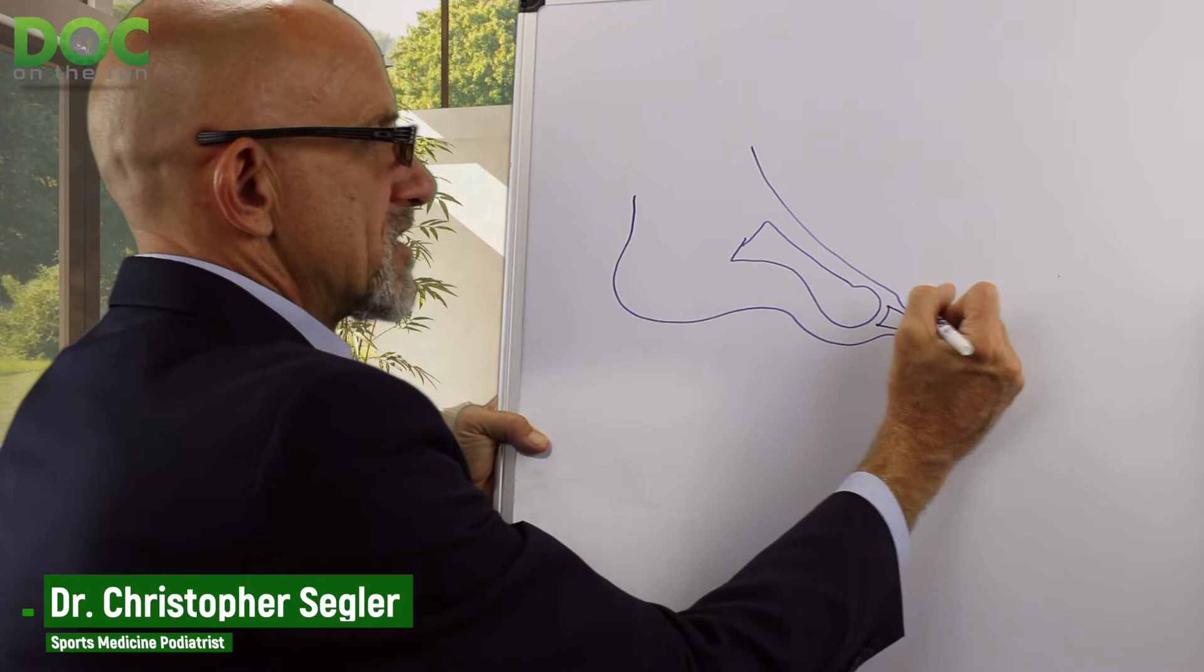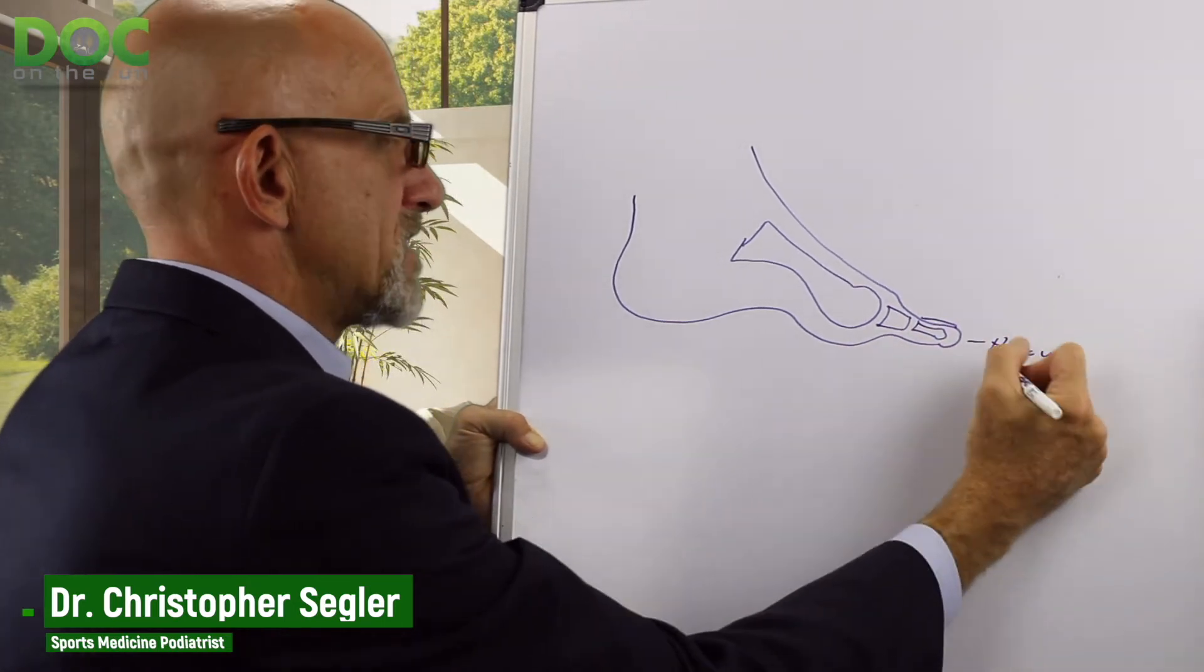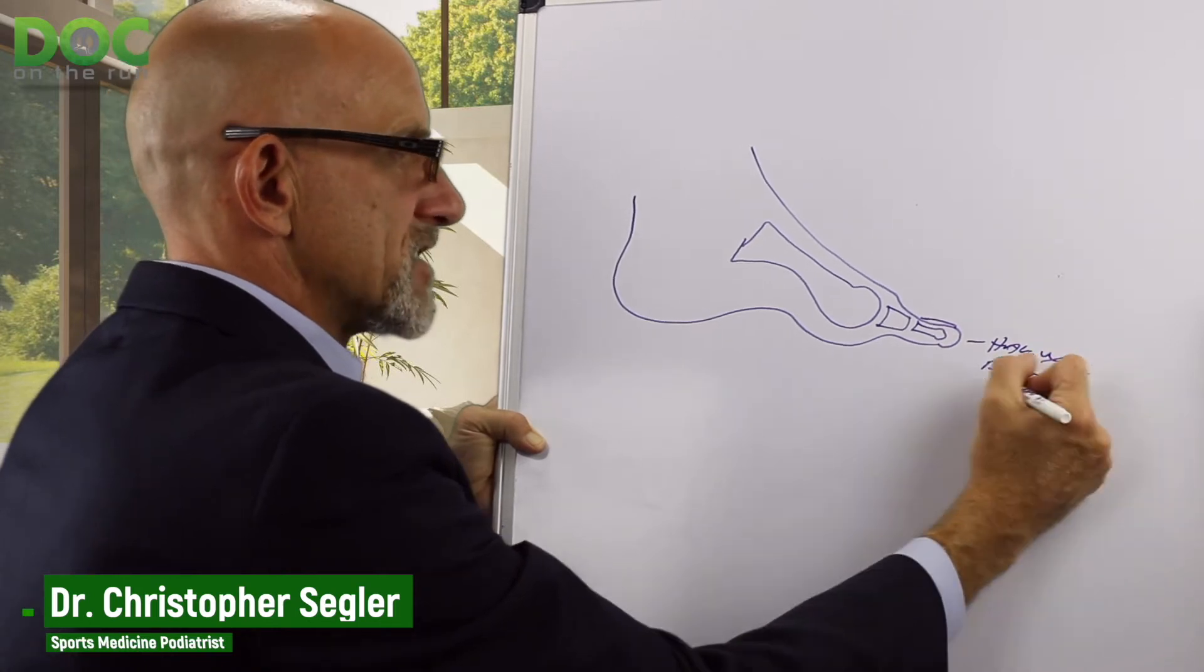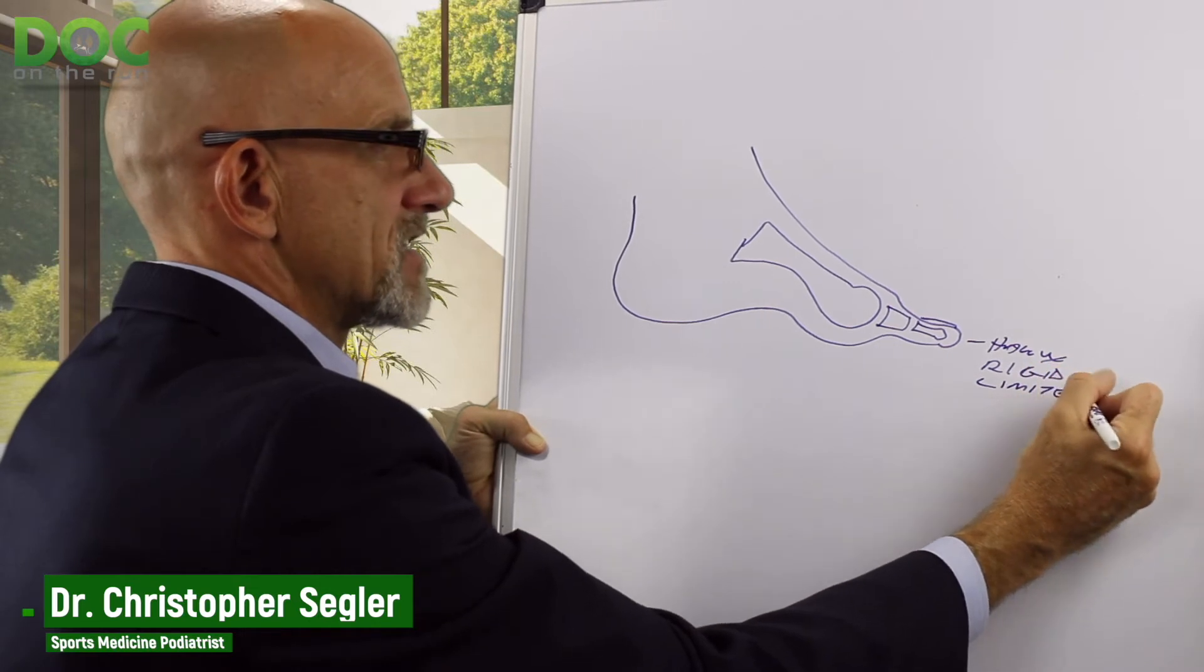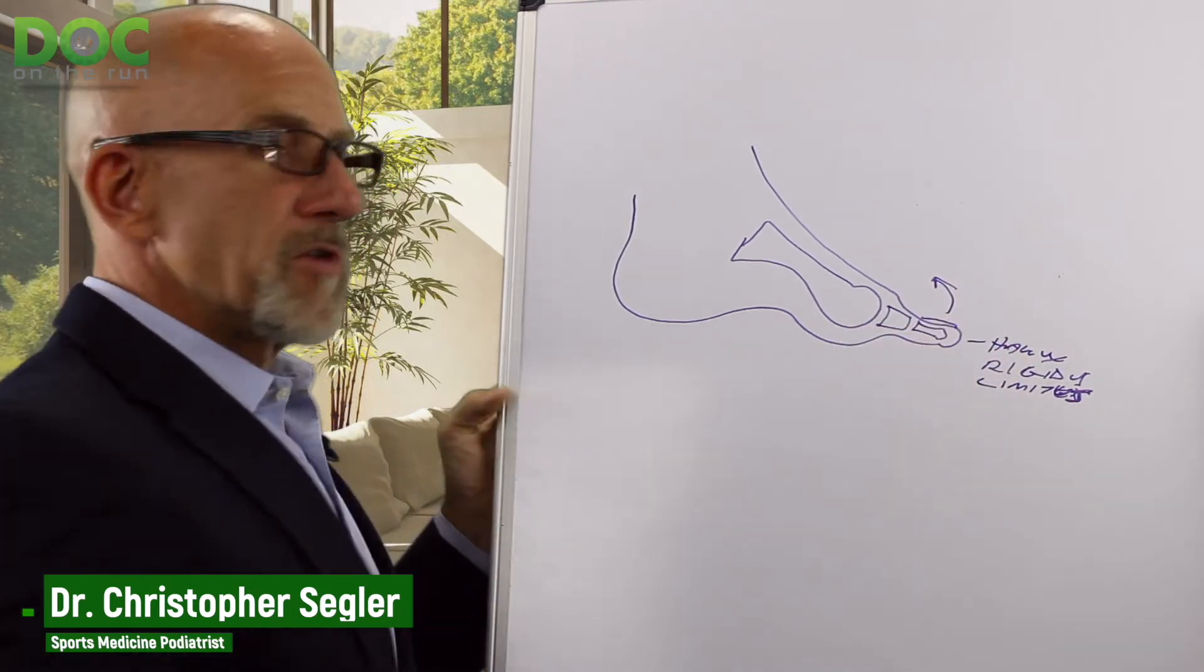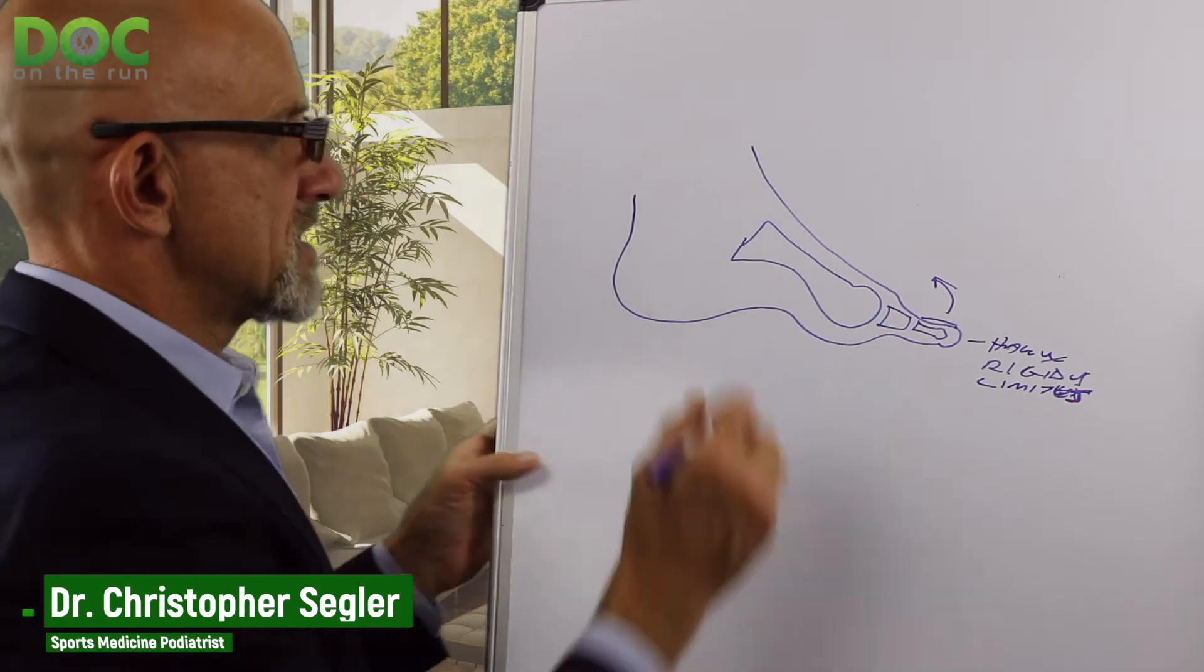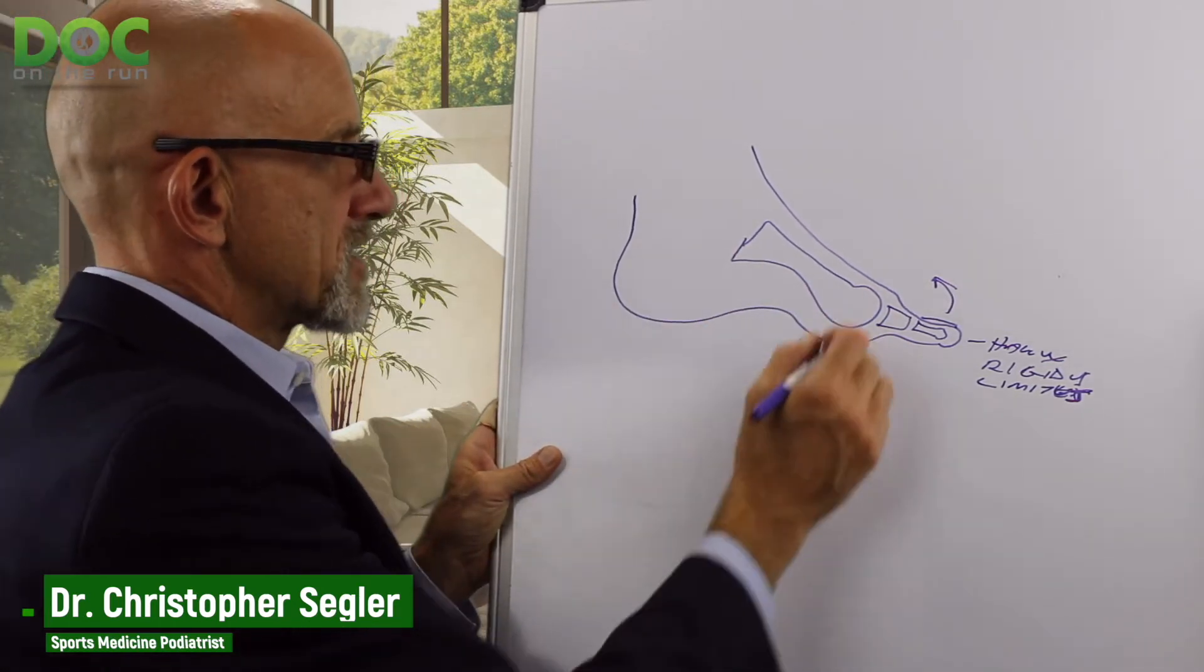What is hallux rigidus? It just means the hallux is the big toe. Rigid means it does not move. Limitus, which is sort of the precursor to hallux rigidus, means it is limited. It doesn't move as much. So it doesn't move up as much. Why does it not move up as much? Well, a couple of reasons. One of the most common causes of hallux rigidus is that the first metatarsal is too long, and that makes it a lever that makes it stiff.